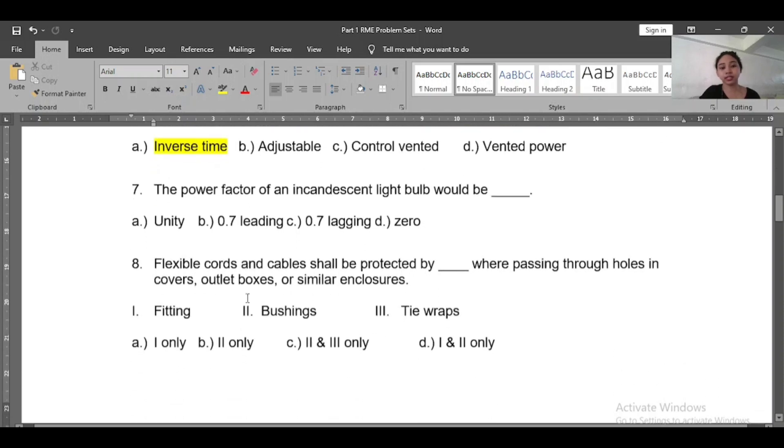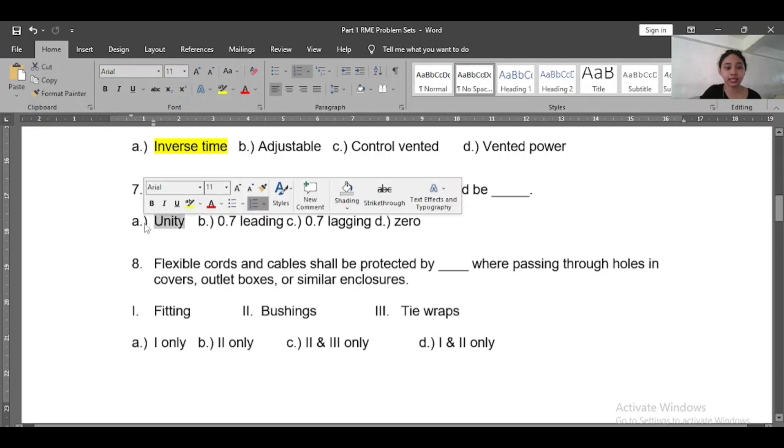Number seven: The power factor of an incandescent light bulb would be what? A) Unity, B) 0.7 leading, C) 0.7 lagging, D) Zero. So the answer is unity. The incandescent light bulb is in unity.